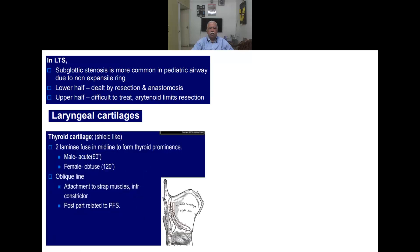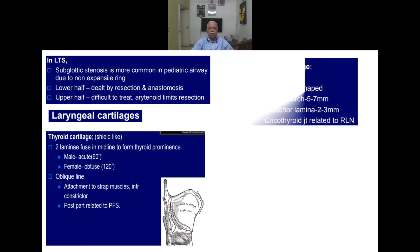The thyroid cartilage gets its name because it resembles a shield held by Roman soldiers. Two laminae are fused in the midline to form the thyroid prominence. In males, the angle is 90 degrees forming the Adam's apple; in females, it is 120 degrees (obtuse). The oblique line provides attachment to the strap muscles and inferior constrictor. The posterior part is related to the piriform fossa.